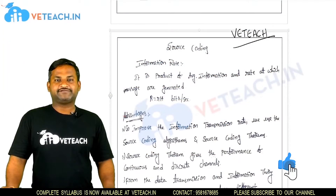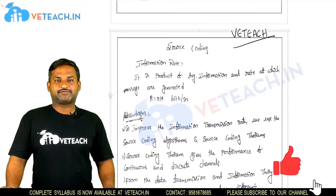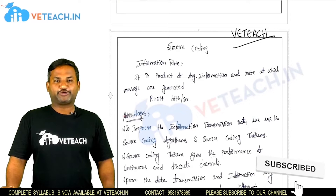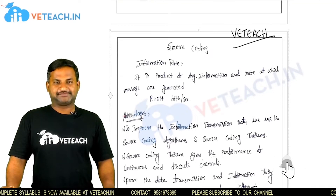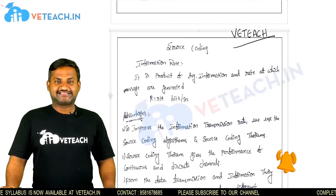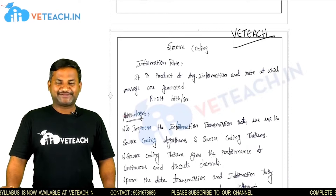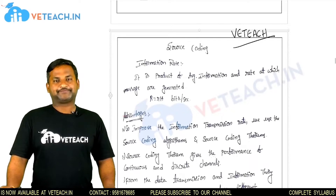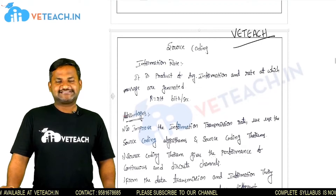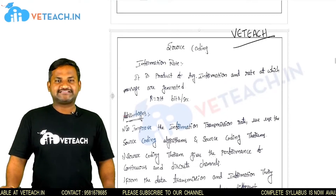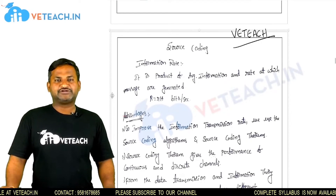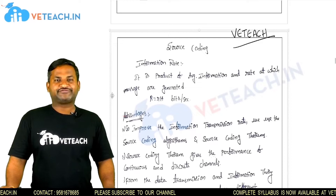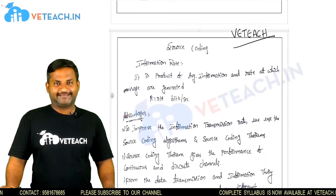Welcome to Vteach. Today we are going to discuss about source coding, one of the important topics in digital communication systems. Digital communication is nothing but transmitting digital information from one place to another. The basic difference between digital communication and analog communication is simple: in digital, coding is available; in analog, coding is not available.